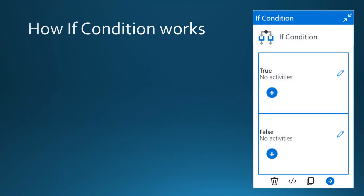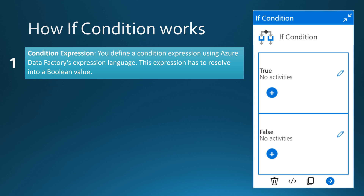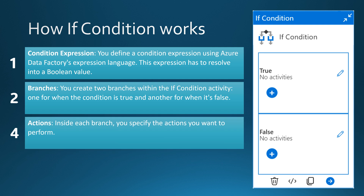Let's check out in more detail how If Condition works. The If Condition activity has two parts: first, we define the condition expression using Data Factory's expression language, which must resolve to a Boolean value — true or false. The If Condition has two branches corresponding to those two Boolean values, and in each branch we define the activities we want to run when the expression resolves to true or false.